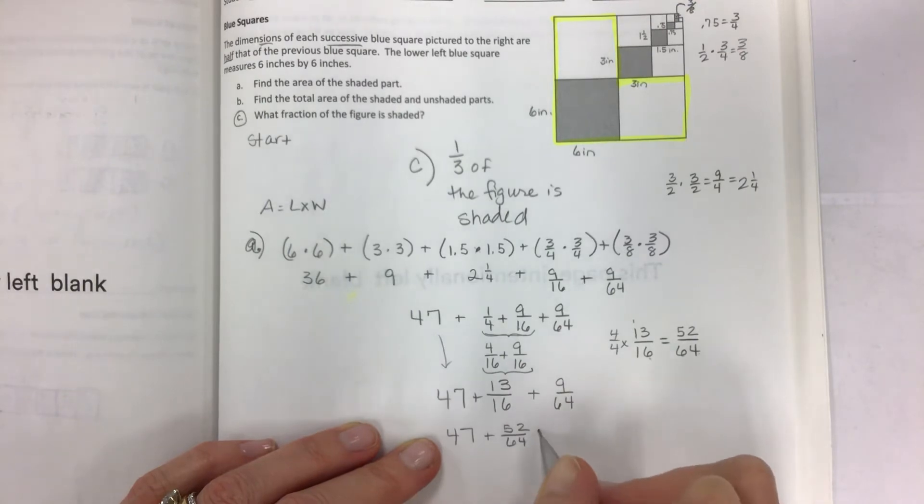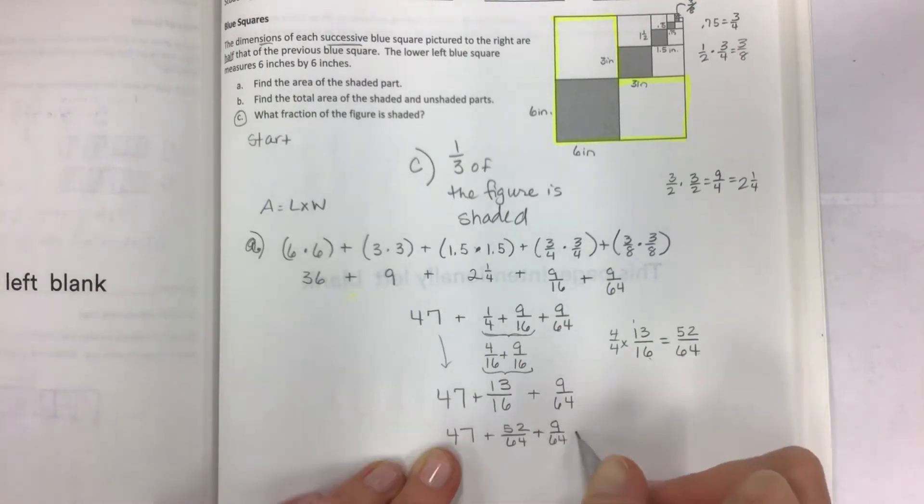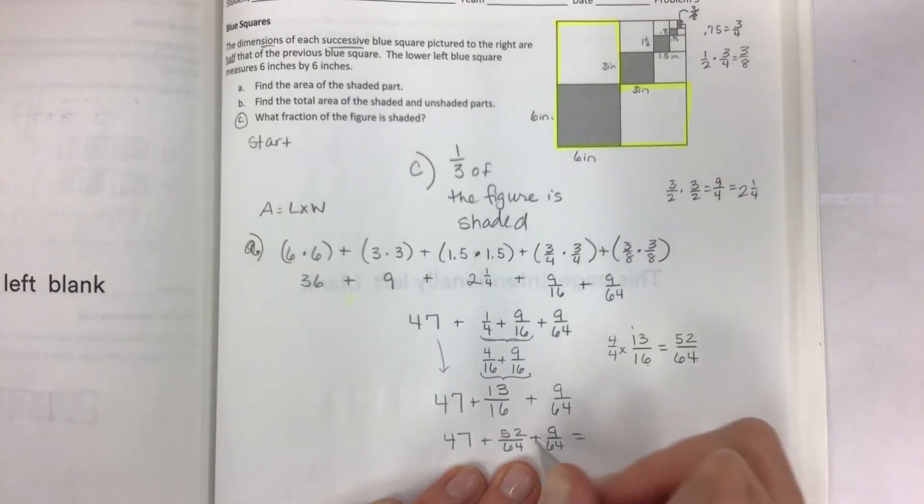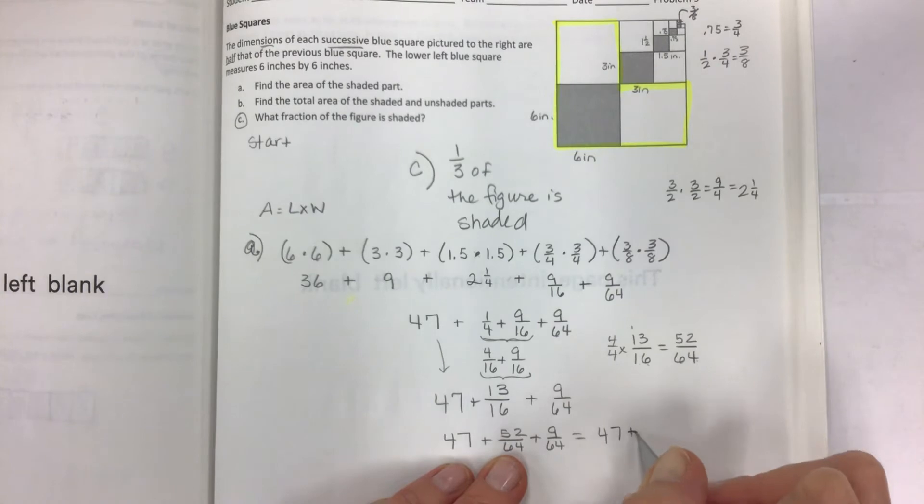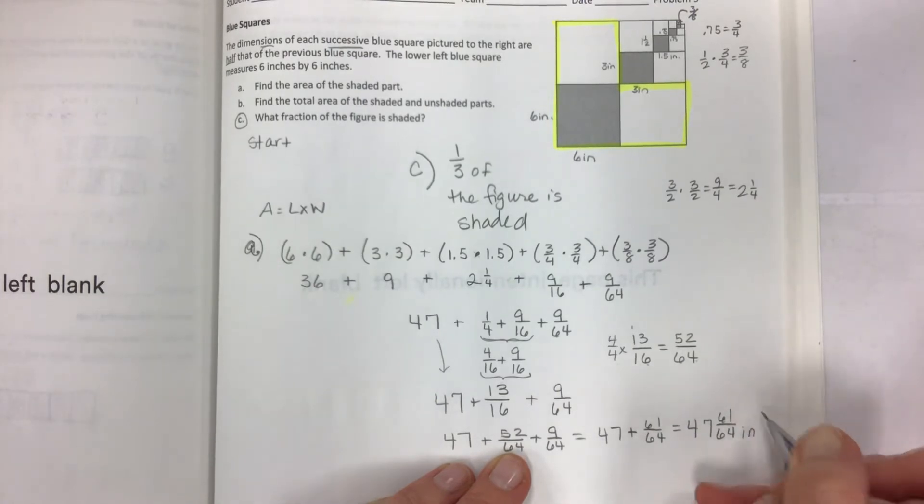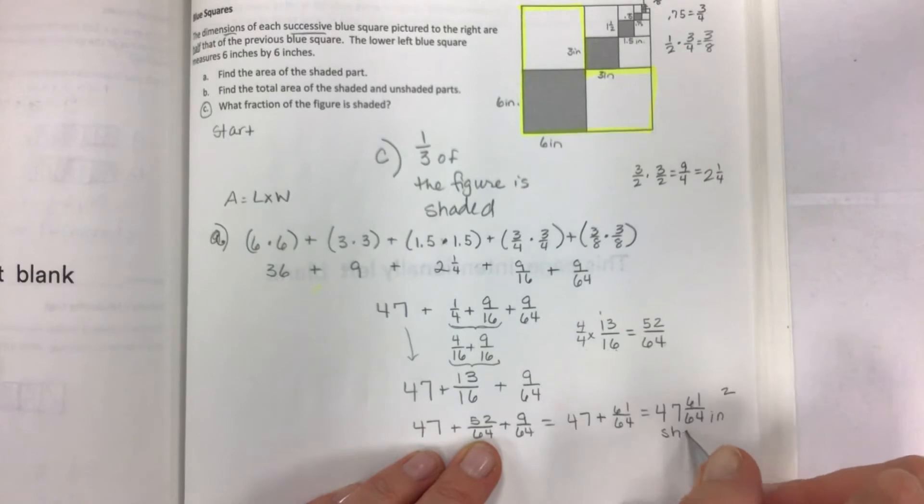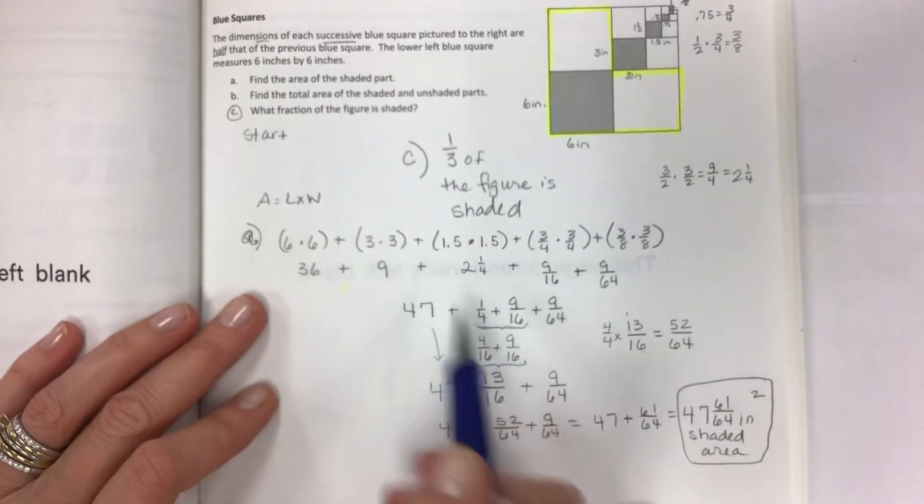So if I go times 4 fourths, double check: 6 times 4 is 24 carry the 2, 4 times 1 is 4 plus 2 is 6. Yep, 4 is my scale factor. So 4 times 13 is 12 carry the 1, 4 times 4 is 16 plus 1 is 17. So that's my new fraction to have an equivalent common denominator: 52 sixty-fourths and 9 sixty-fourths. So I'm going to leave a little bit of room for part B. And 52 plus 9 is 61. So that is your answer for part A. 47 and 61 sixty-fourths inches squared. So lots and lots of work here. So now we have A and C done and then we just need to solve part B.